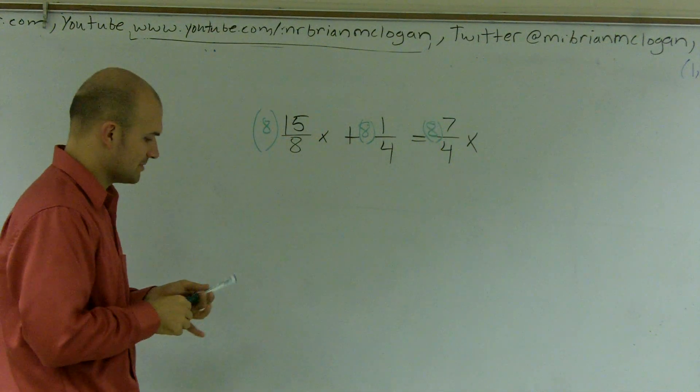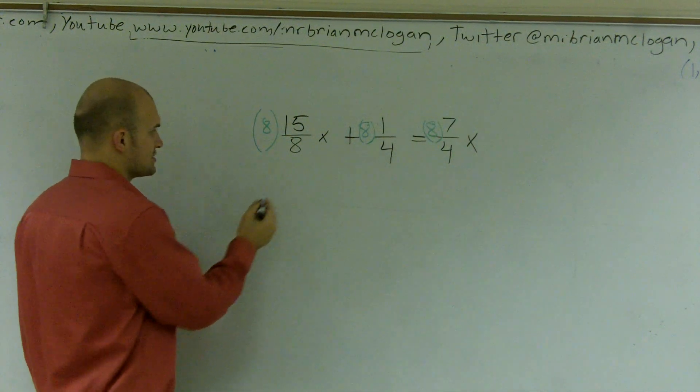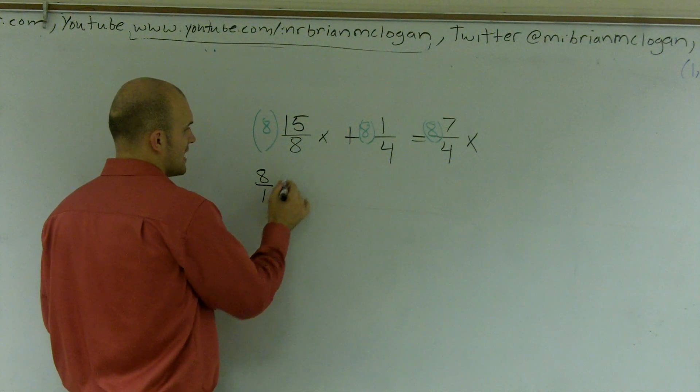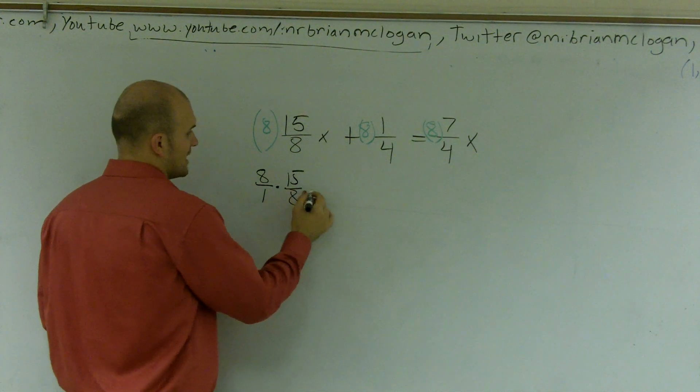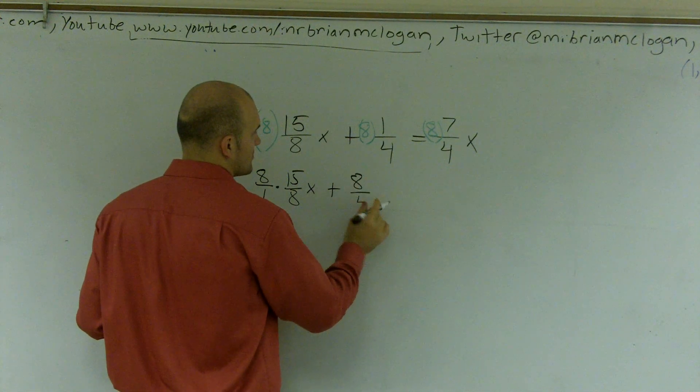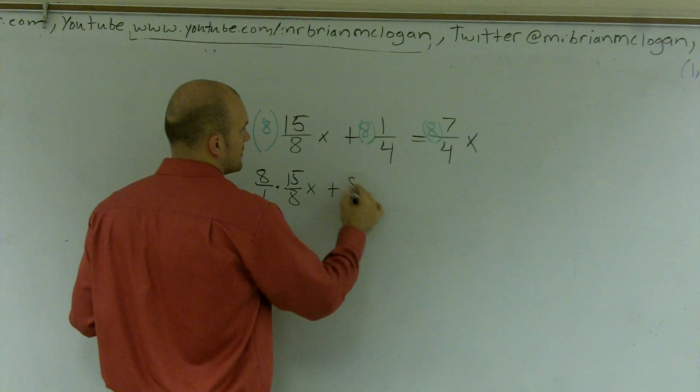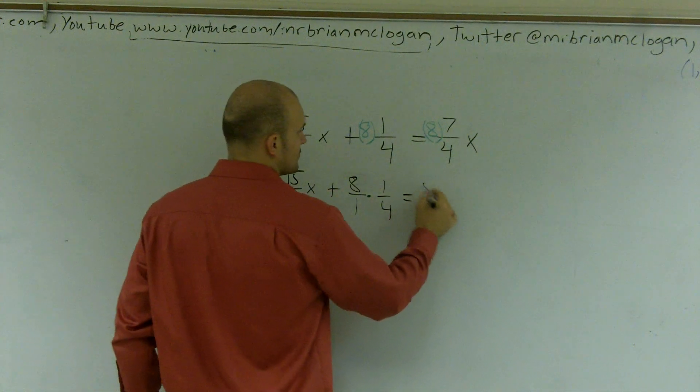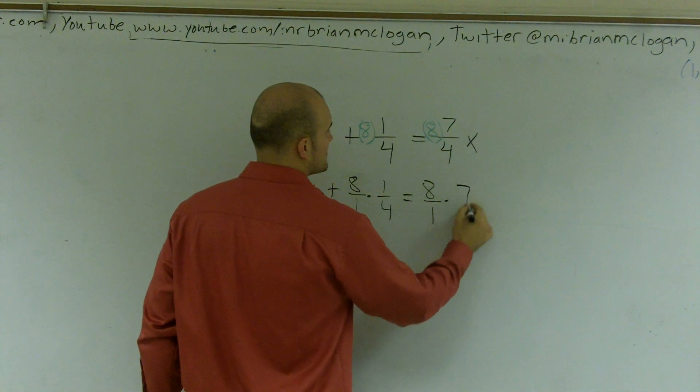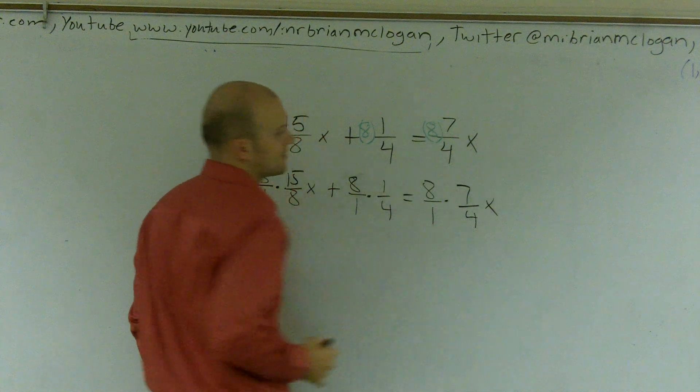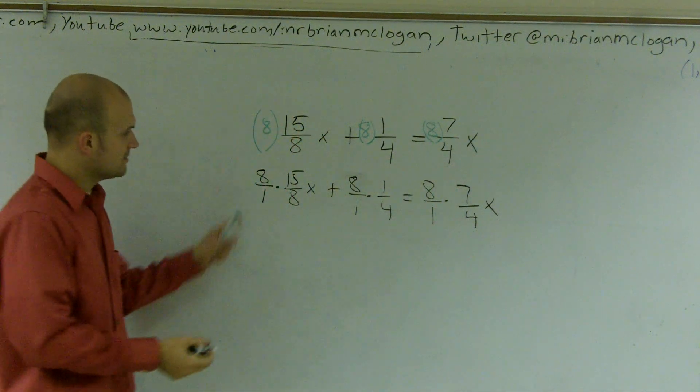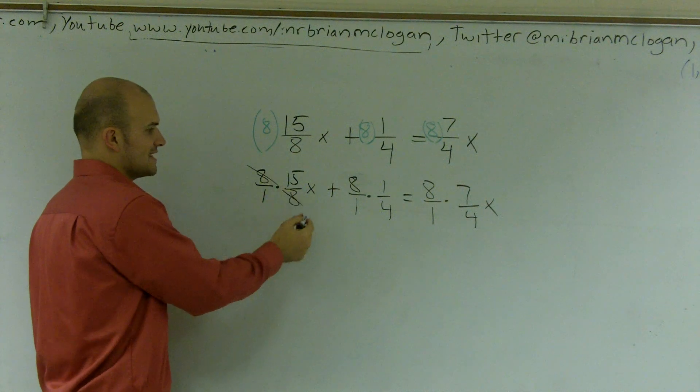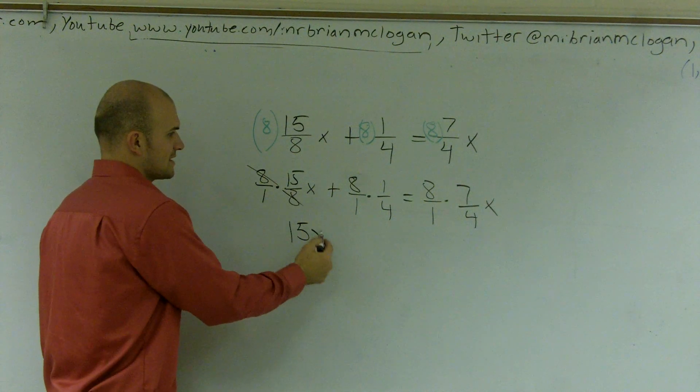Now, remember, there's a couple things. When multiplying fractions times a whole number, it's going to look like eight over one times 15 over eight x plus eight over one times one over four equals eight over one times seven over four x, all right? So then these technically cancel out. If I multiply by eight and divide by eight, you can just cancel them out and you're left with 15x.